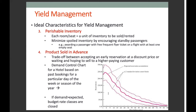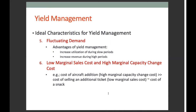The acceptable range is defined as plus or minus 2 standard deviations. If demand is higher than expected, budget rate classes are closed and only reservations at standard rates are accepted. If the accumulation of reservations falls below the acceptable range, then reservations for rooms at budget rates are accepted. The fifth characteristic is fluctuating demand — using demand forecasting, yield management allows managers to increase utilization during slow demand and increase revenue during high demand.